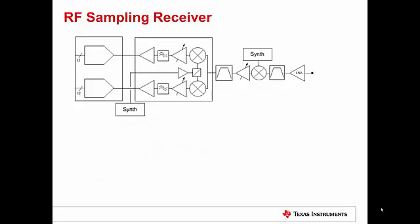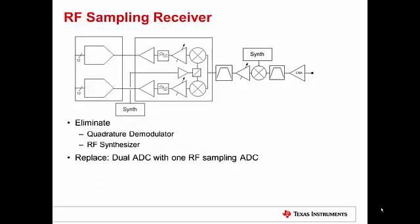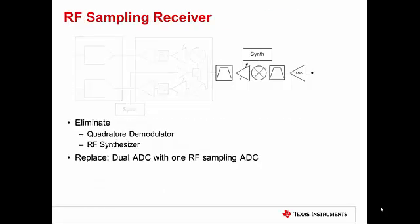Now let's look at the RF sampling receiver. Here we're going to eliminate the quadrature demodulator and the RF synthesizer and replace it with a single RF sampling ADC that's sampling at a very high frequency, a very high sampling rate.